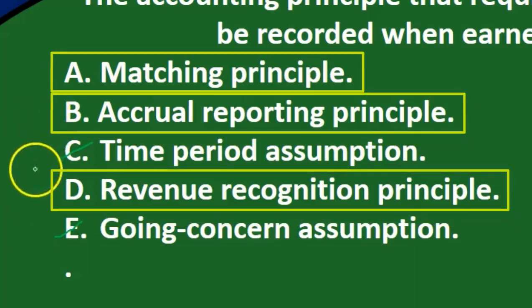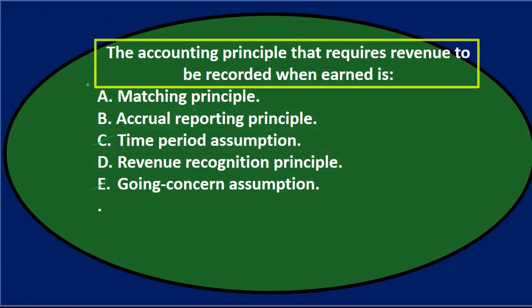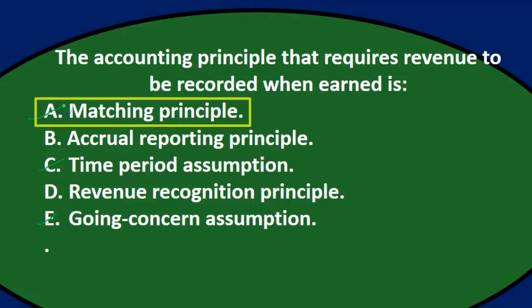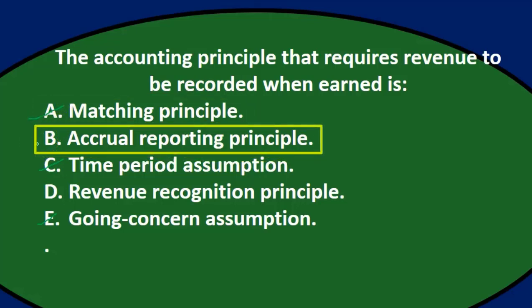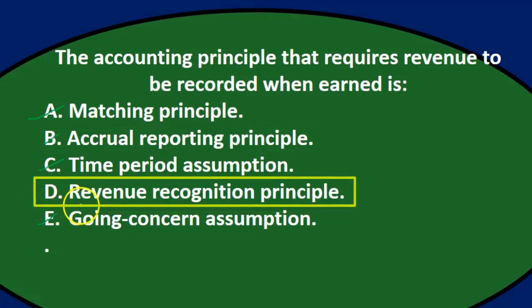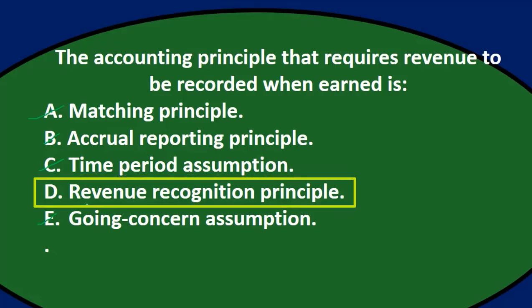So we have matching principle, accrual reporting, and revenue recognition principles remaining. The matching principle is an accrual principle, but it's actually the expense side, so I'm going to cross that out. Accrual reporting principle is a general setting — accrual principles include the matching principle and revenue recognition. The more proper answer would be the revenue recognition principle; it's more specific. This is an accrual principle, but it's a more specific accrual principle related to when revenue should be recognized.